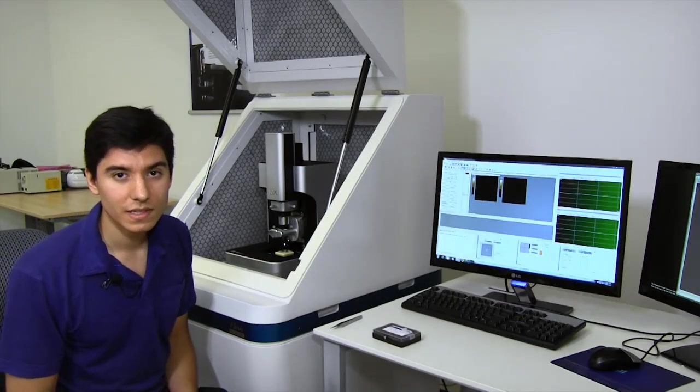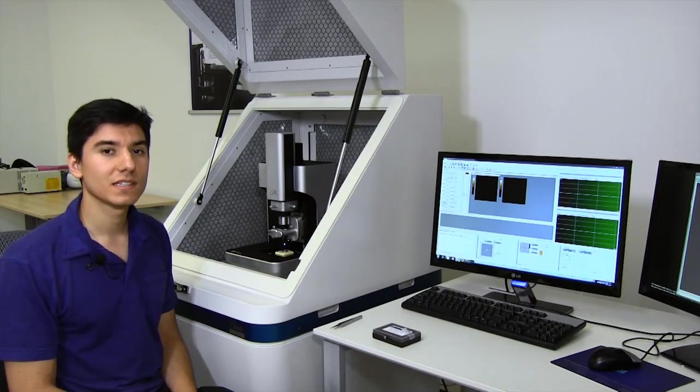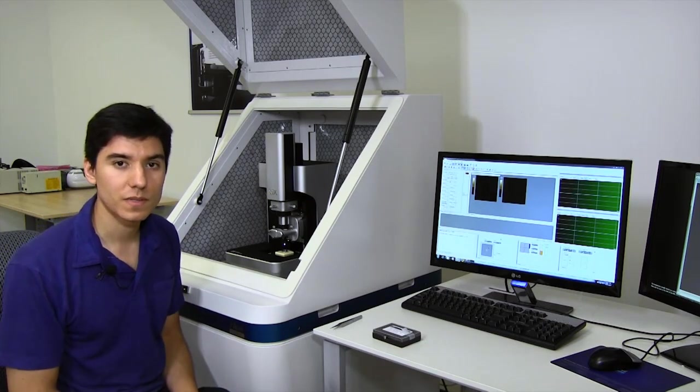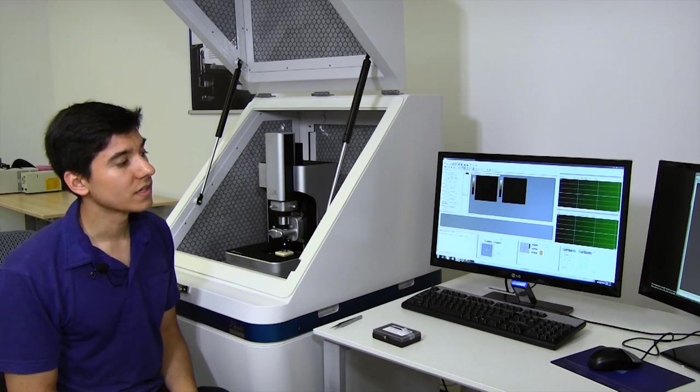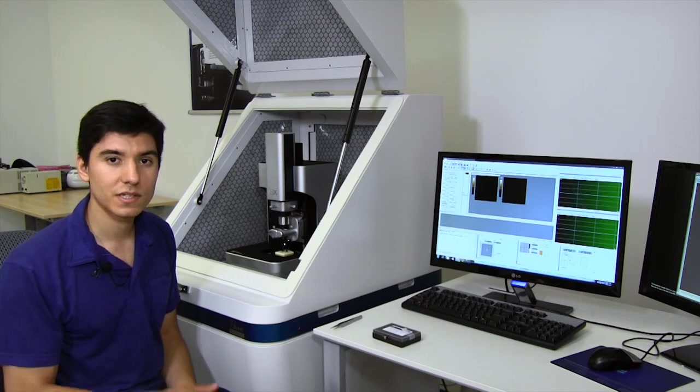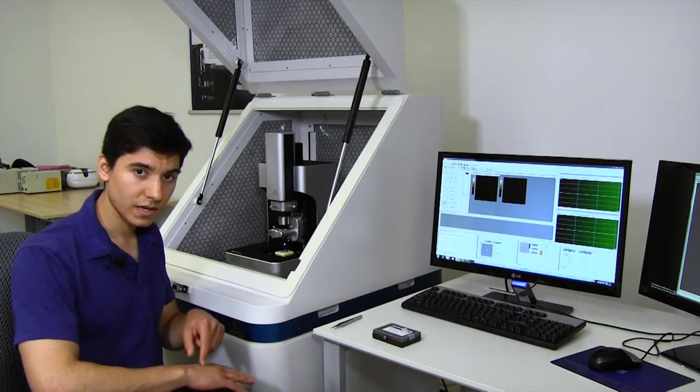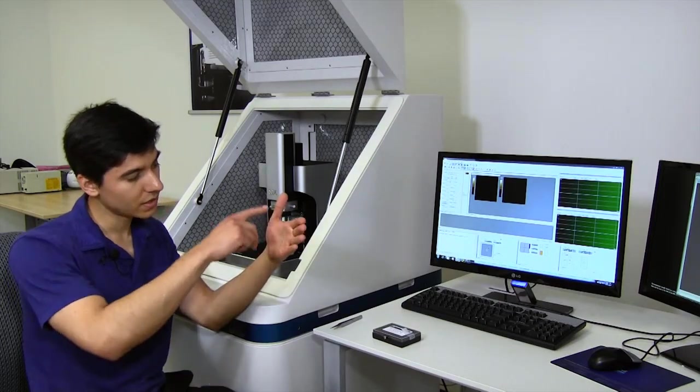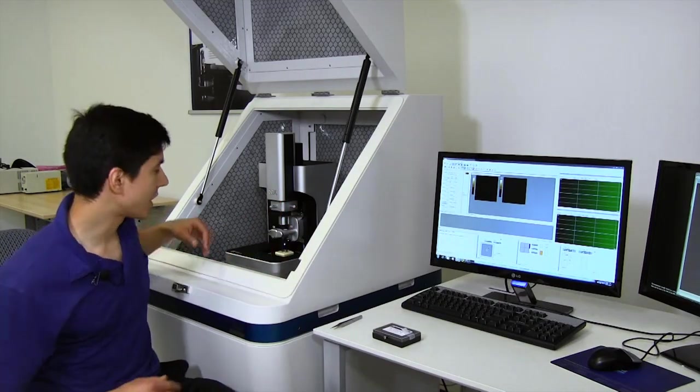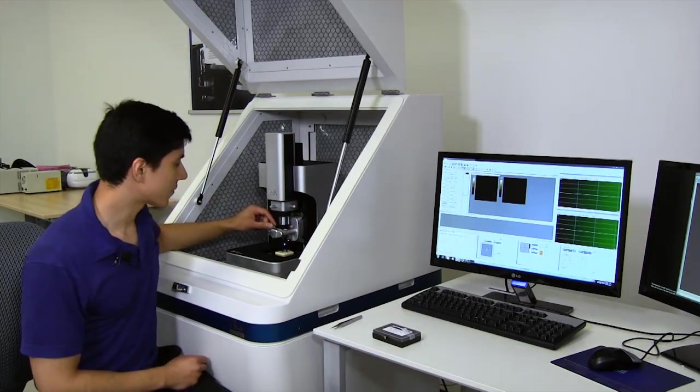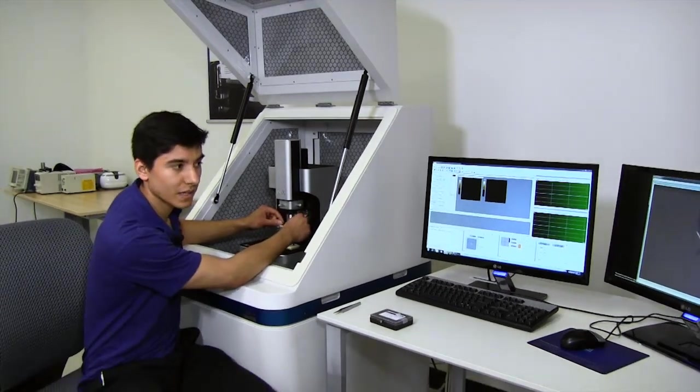Now that the AFM probe is loaded into the microscope, the next step is to ensure the detection beam that senses what the probe is doing is aligned first to the back of the cantilever, and then the reflection is aligned to the middle of the detector. First, let me do the alignment to the back of the cantilever,